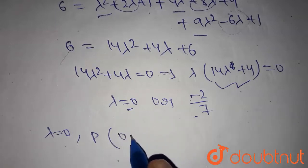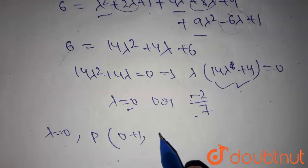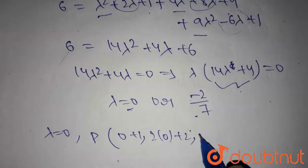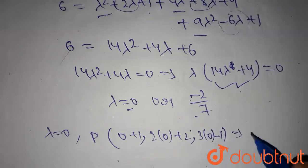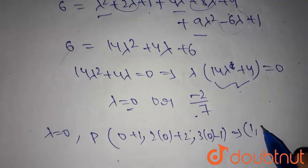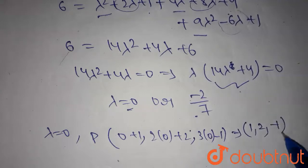0 plus 1 comma, 2 into 0 plus 2 comma, 3 into 0 minus 1. This point becomes (1, 2, -1).